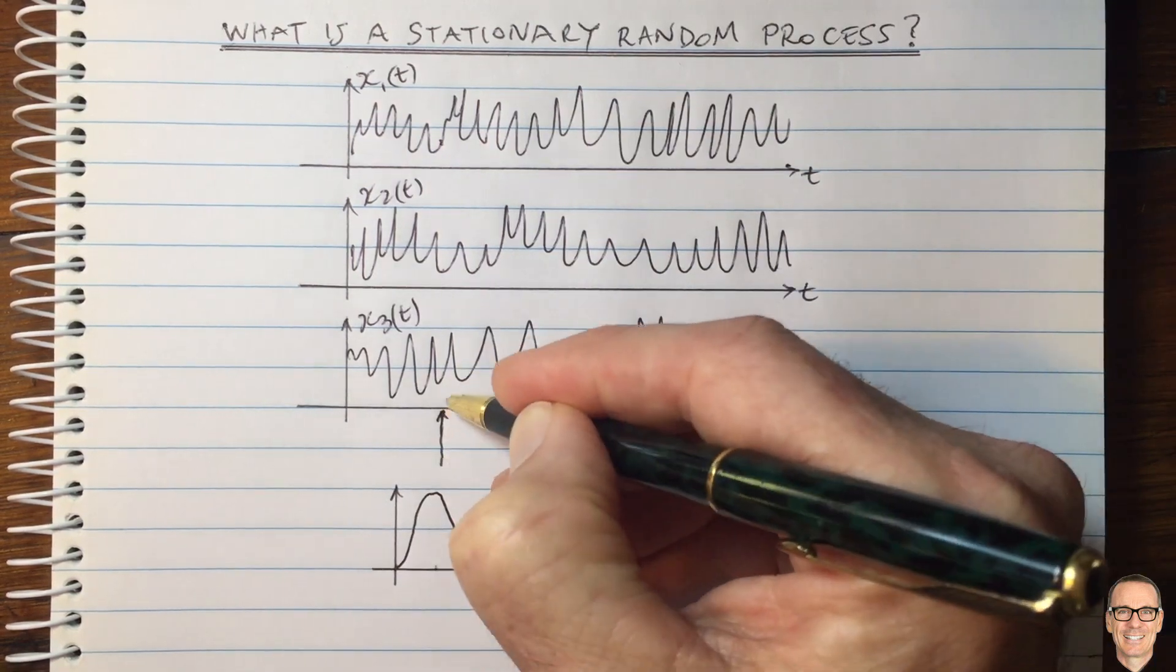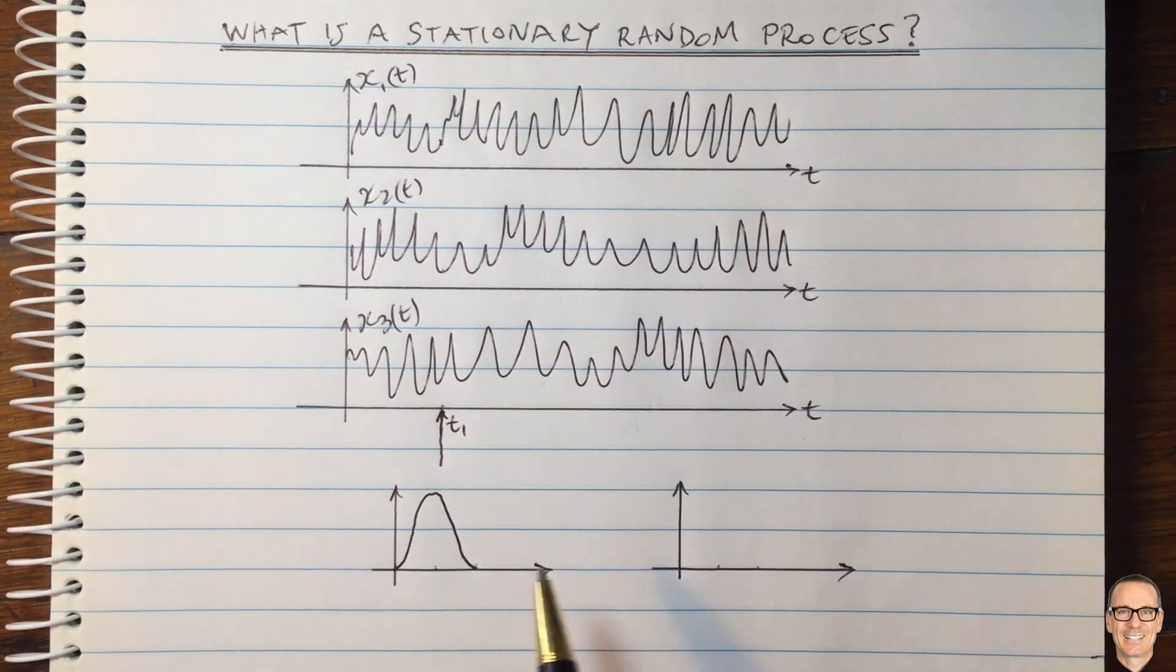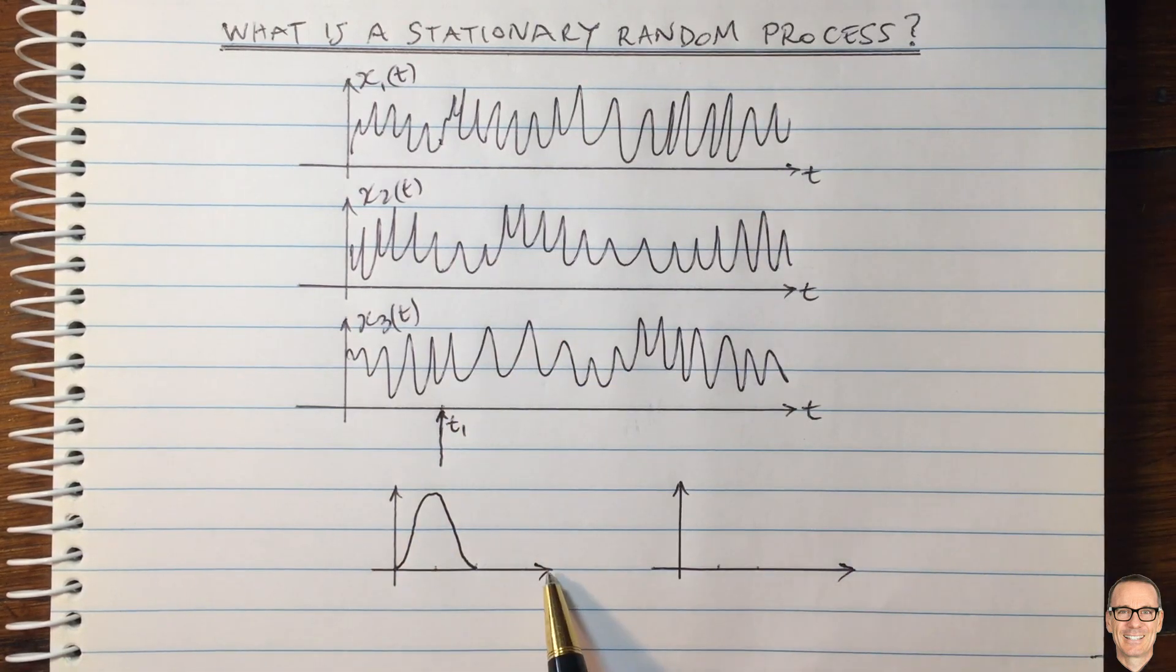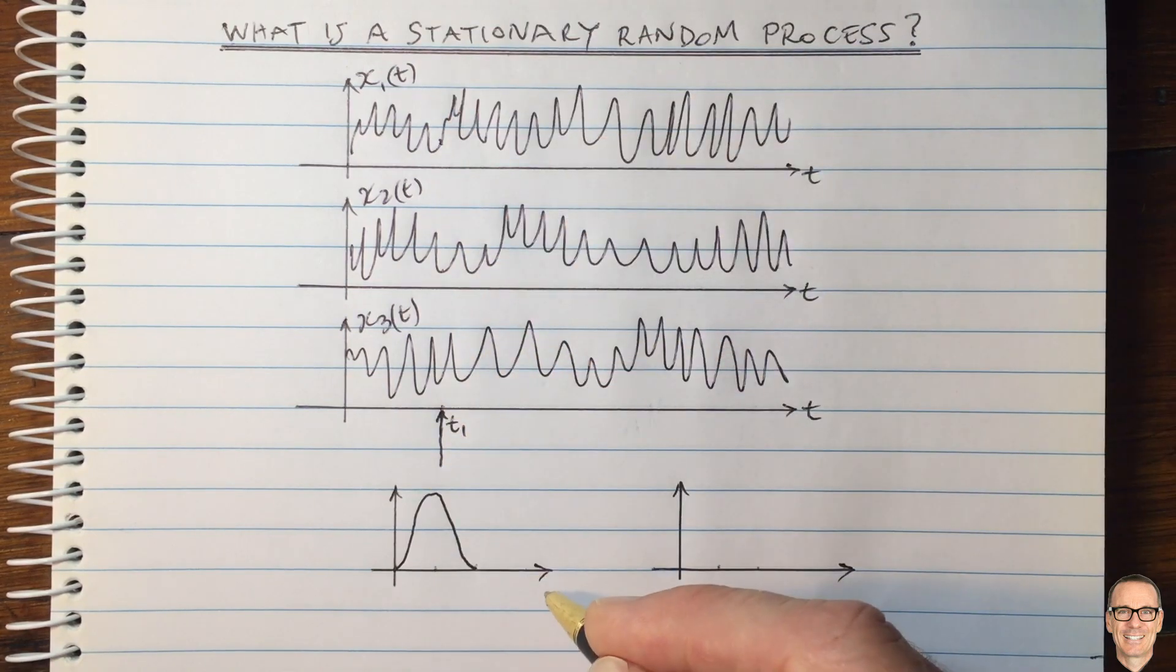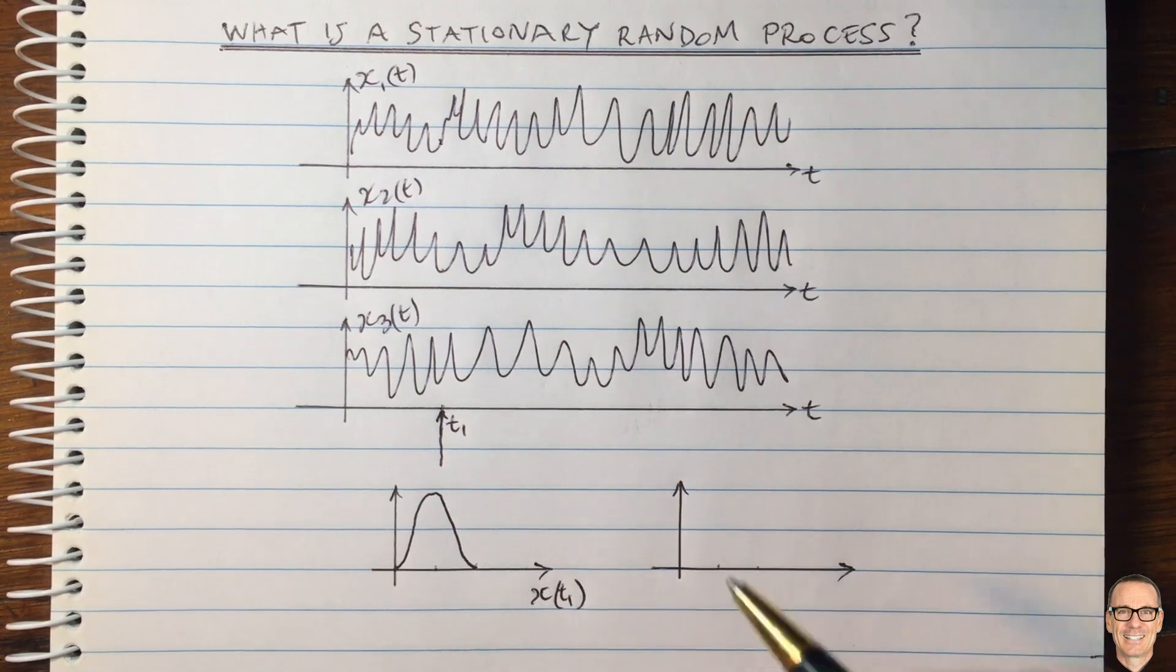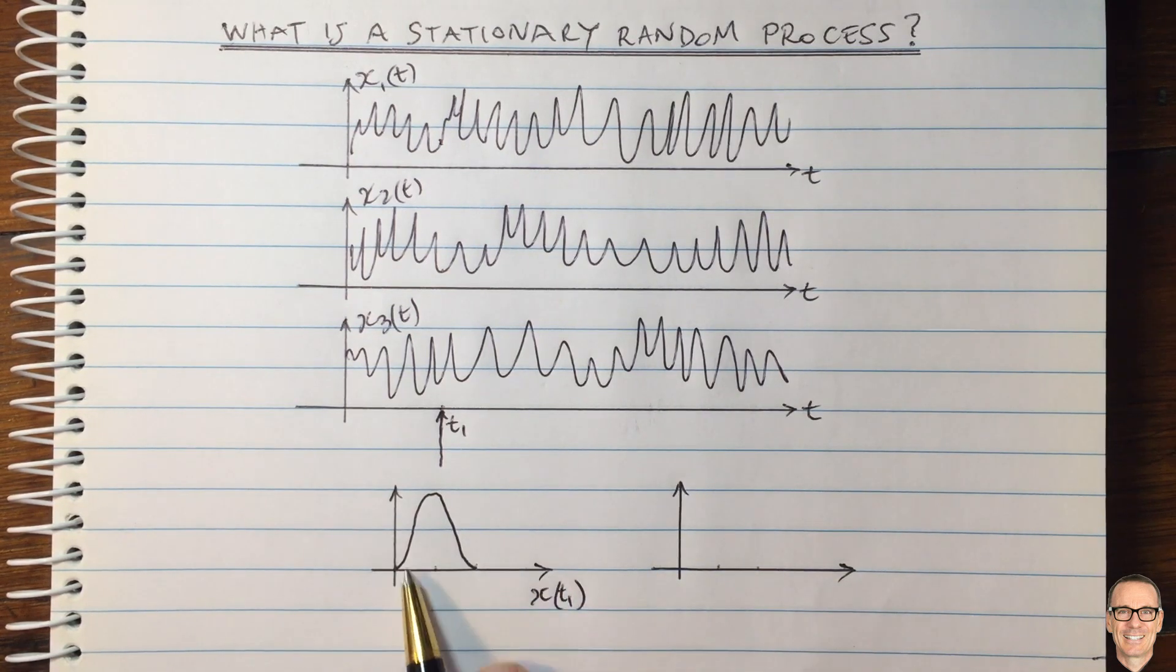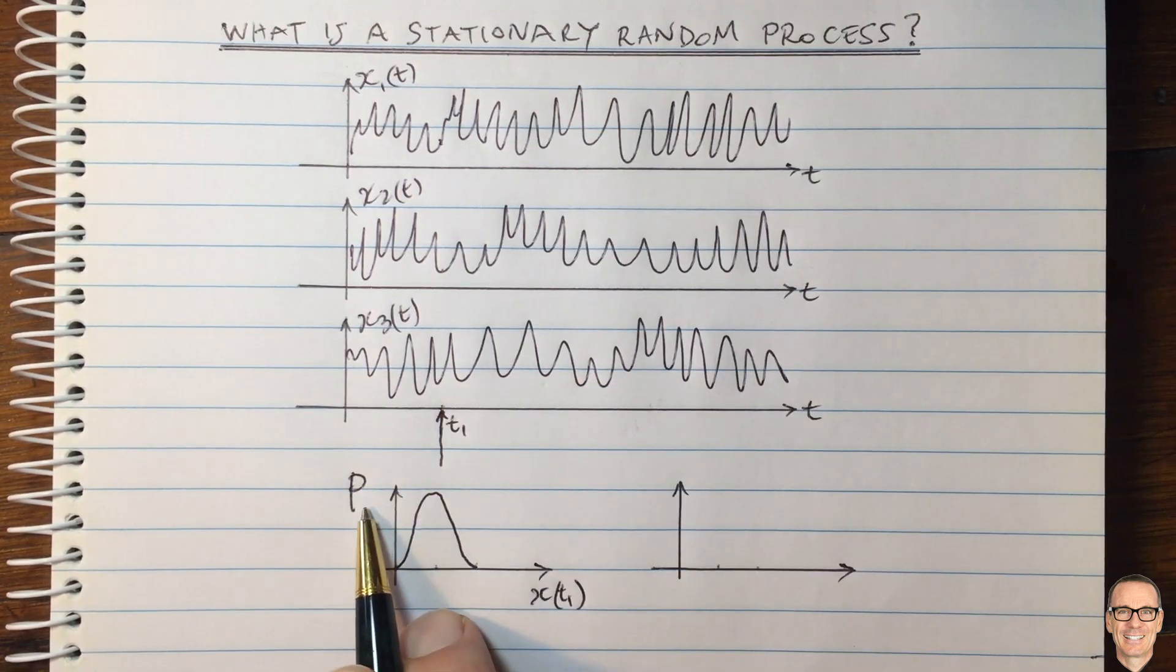So we take that exact time there. Let's call it t1, for example. And then we're going to plot the density function for the random variable at that time. So here we have, on this axis, we have x at t1 on the horizontal axis. And then this would be the probability of x at t1. This is the density function.